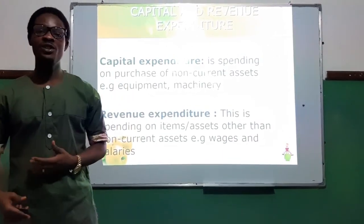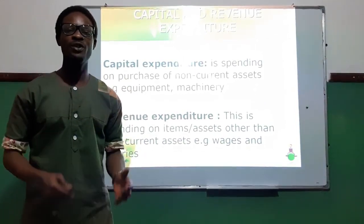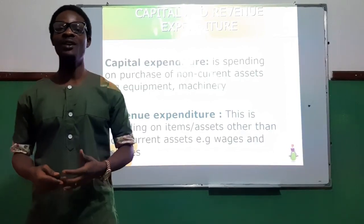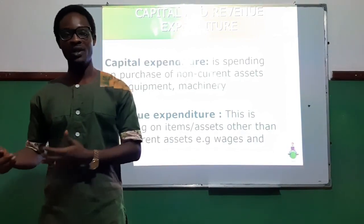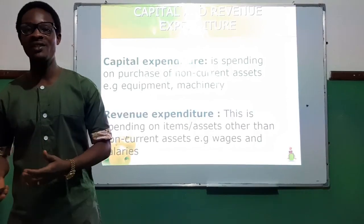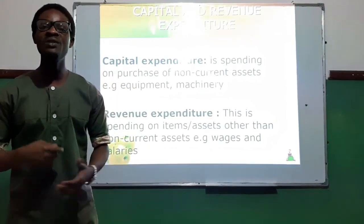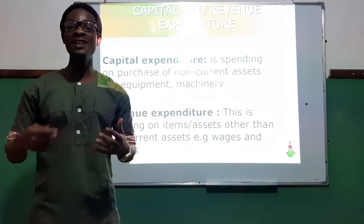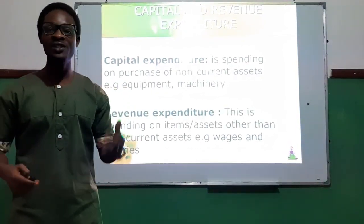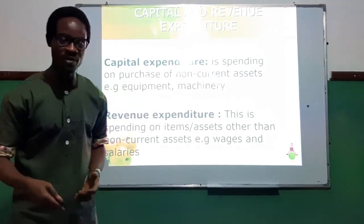Revenue expenditure is spending on items other than non-current assets. That means spending on wages and salaries, purchase of stationeries, rates, rent, electricity, and bills paid. These happen regularly — at least once every month or once every year — and this is what makes these expenses revenue expenditure.